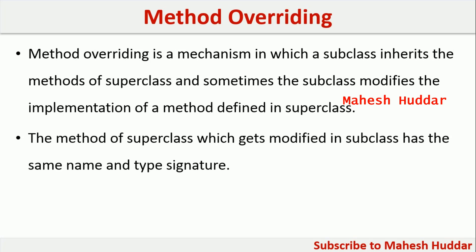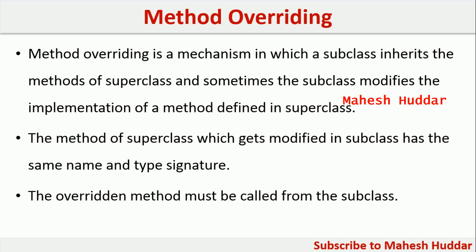The method of the superclass which gets modified in the subclass has to have the same signature — that is, the method name should be the same, the type and number of arguments should be the same, and so on. The overridden method must be called from the subclass; we cannot call the overridden method from the superclass in this case.